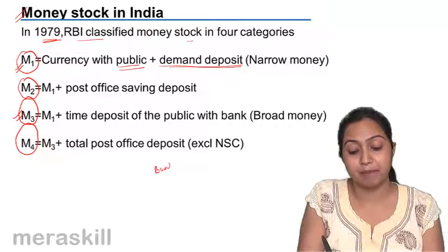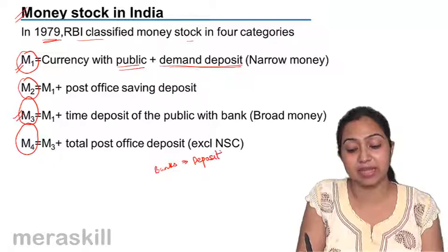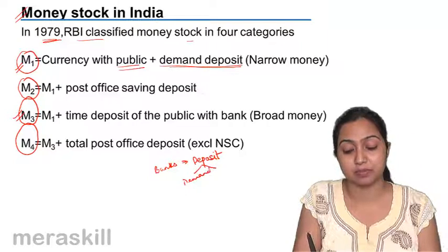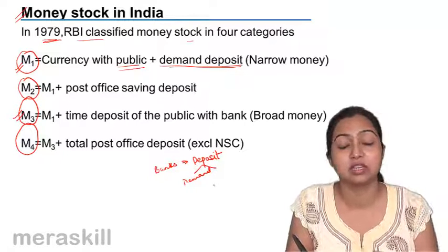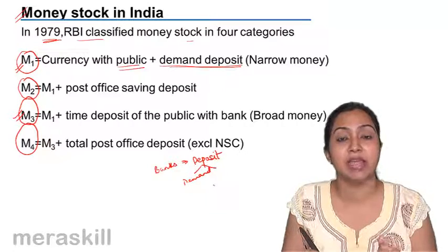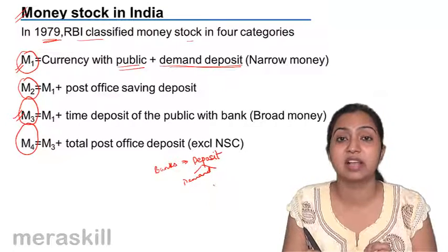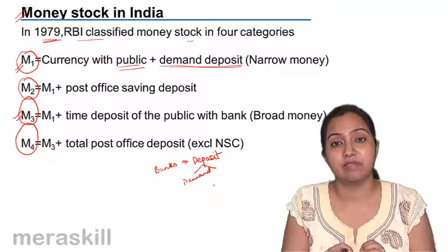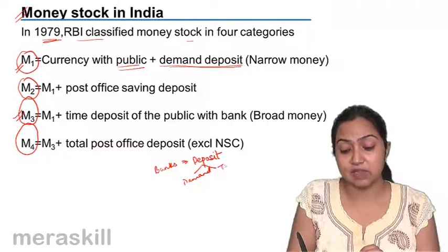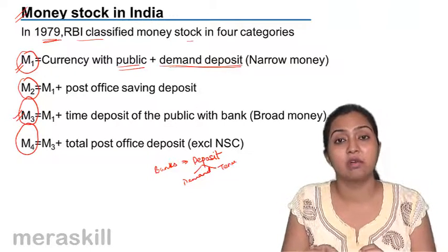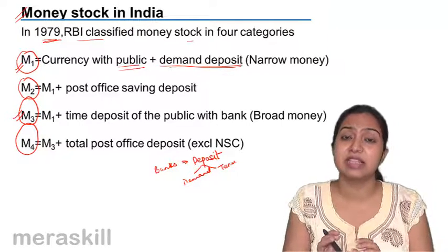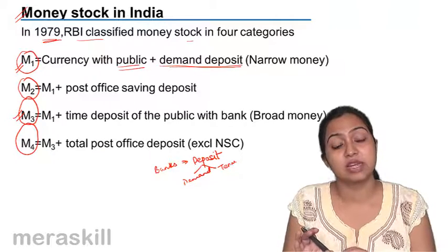Banks are for keeping our deposits. Whatever extra money we have, we put it in banks as our savings. These deposits are of two kinds. One is demand deposit — as the word suggests, whenever we demand, the bank gives it to us, like a savings bank account. All other kinds of deposits are called term or time deposits, which are for a fixed period of time, known as fixed deposits.